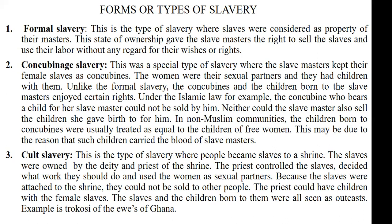The second type of slavery is concubine slavery. This is said to be a special category of slavery where the slave masters took some of the female slaves and made them their concubines. They had sexual intimacy with the women and had children with them. The children born out of such relationships were usually referred to as the mulatos, or what we call the half-caste — they were mixed race children. Because the women were seen as concubines of the slave masters, they enjoyed certain rights that people in formal slavery did not enjoy.